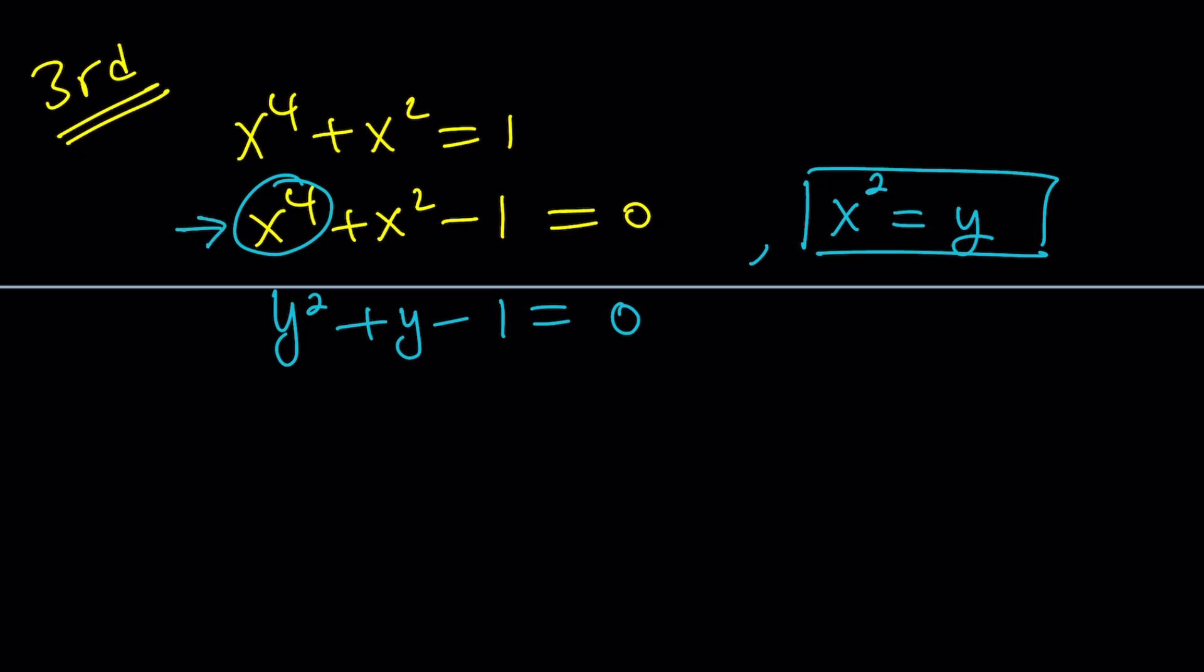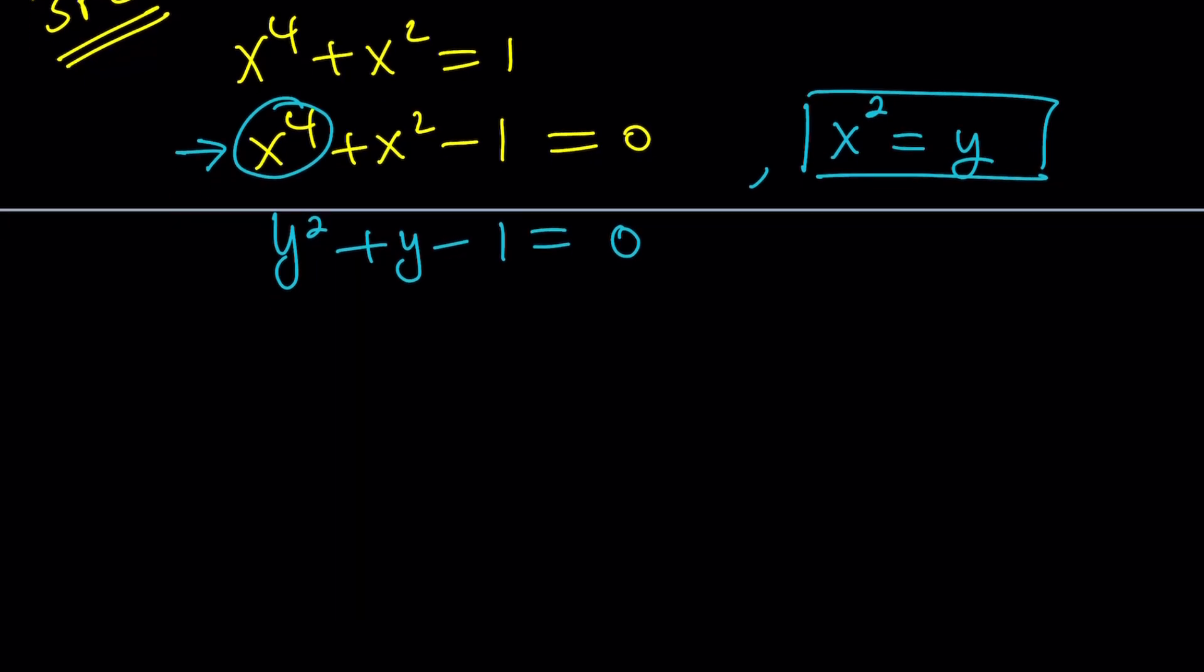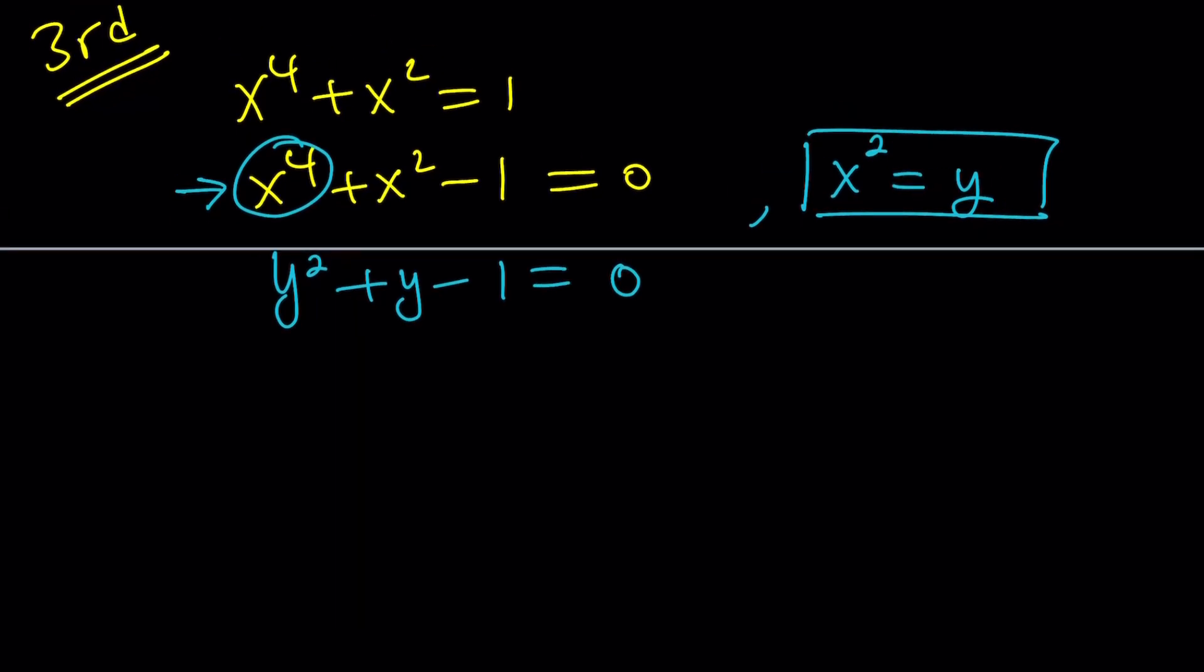We also call these biquadratic because it doesn't contain any x cubed or x. So they're pretty easy to solve. You can obviously use a couple different methods. But think about it first. We can write this using the quadratic formula as negative b plus minus the square root of b squared, which is 1, plus 4, which is 5, divided by 2.